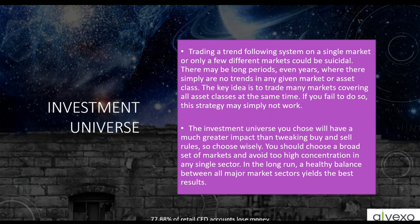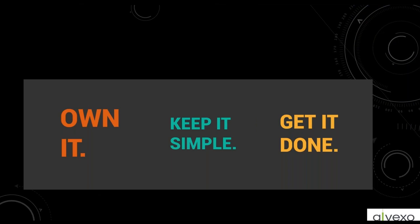The investment universe you choose will have a great impact on your buy and sell rules, so choose wisely. Choose a broad set of markets and avoid too high a concentration in a single sector. In the long run, a healthy balance between major market sectors yields the best results. Trends are beautiful — when they occur, if you wait for them to happen and qualify, you'll make good trading decisions. Keep it simple and just get it done.